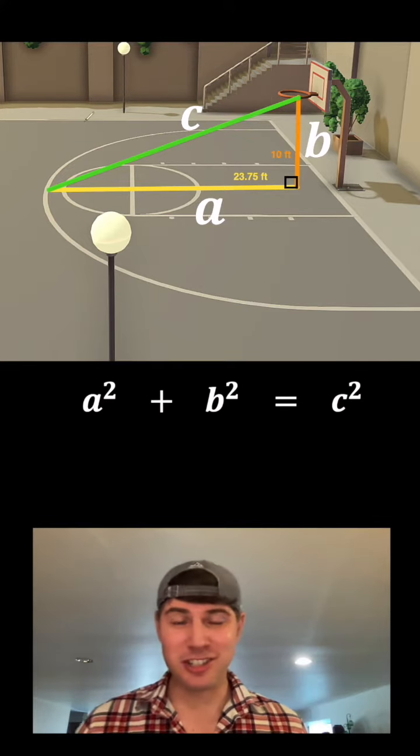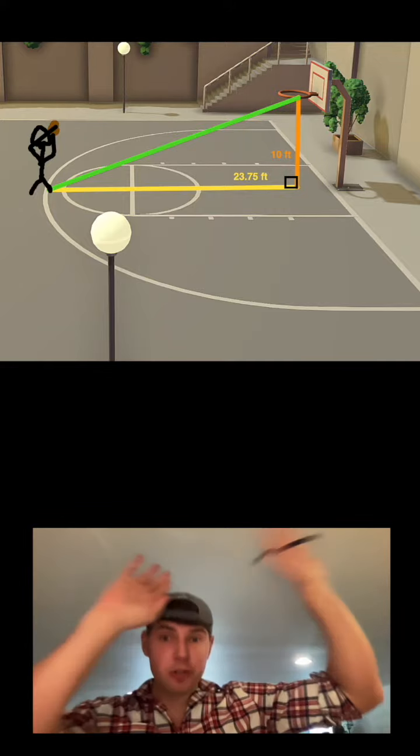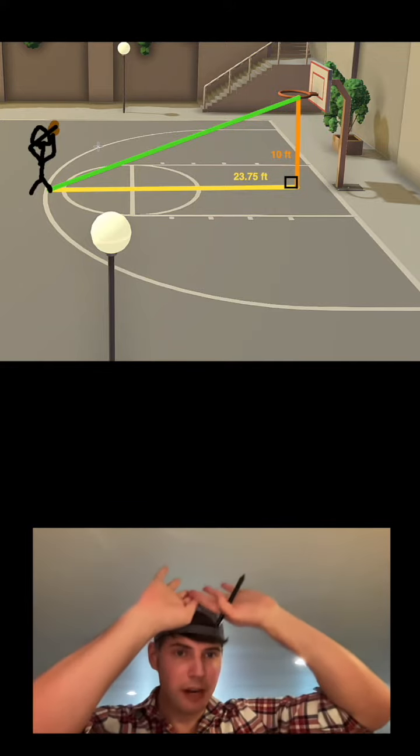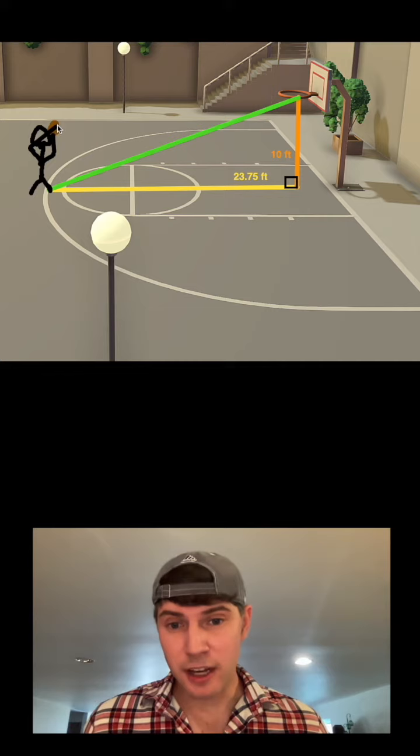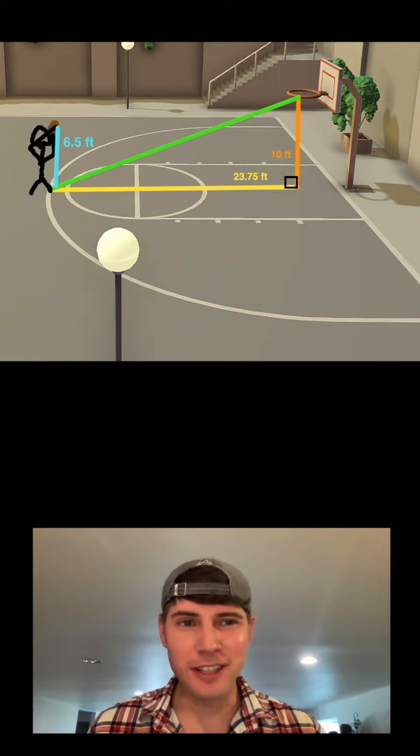Luckily, before I actually started doing the math, I realized something. I am not shooting from the ground. I'm standing up and I'm shooting from here, basically with the ball right about the height of my head. So I need to take into account how tall am I. So I'm 6 foot 6, or in other words, 6.5 feet.